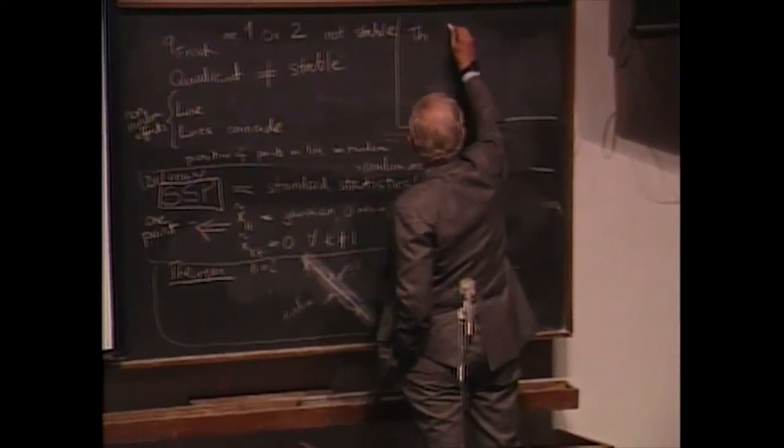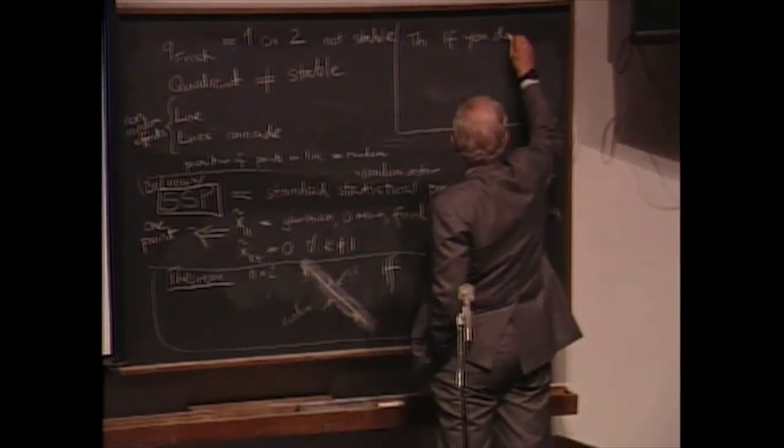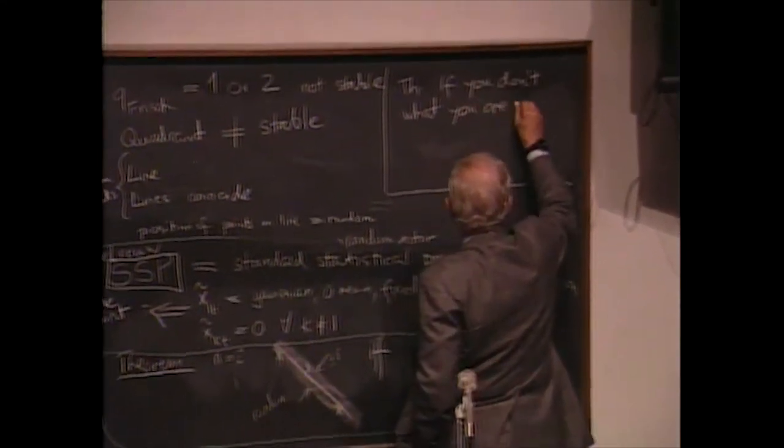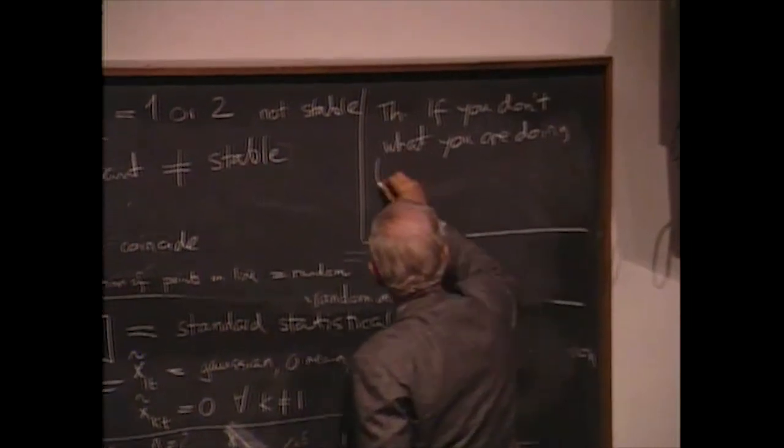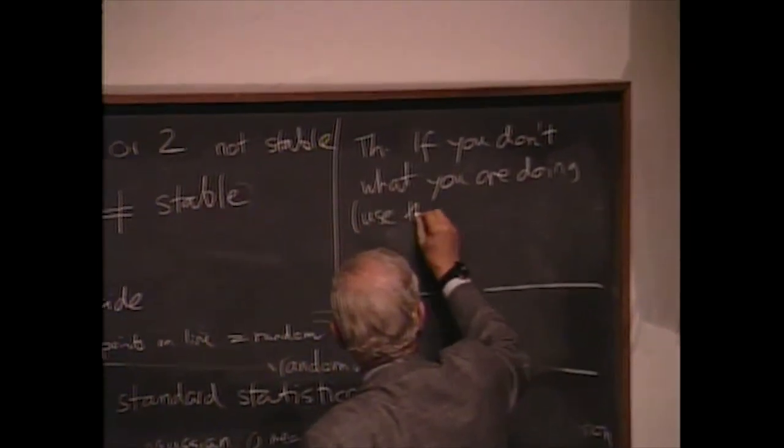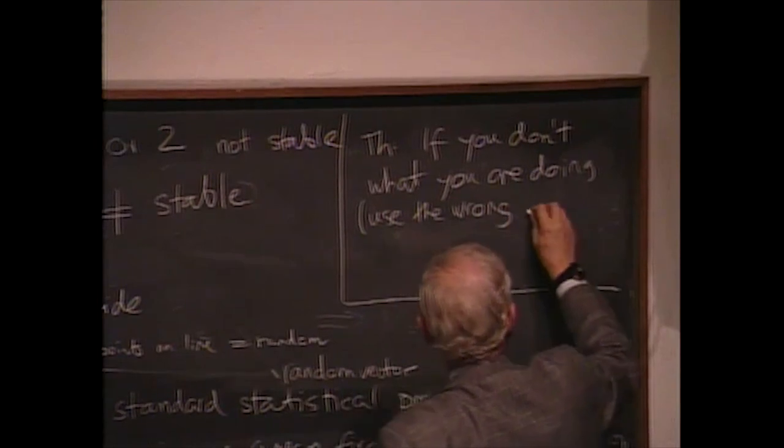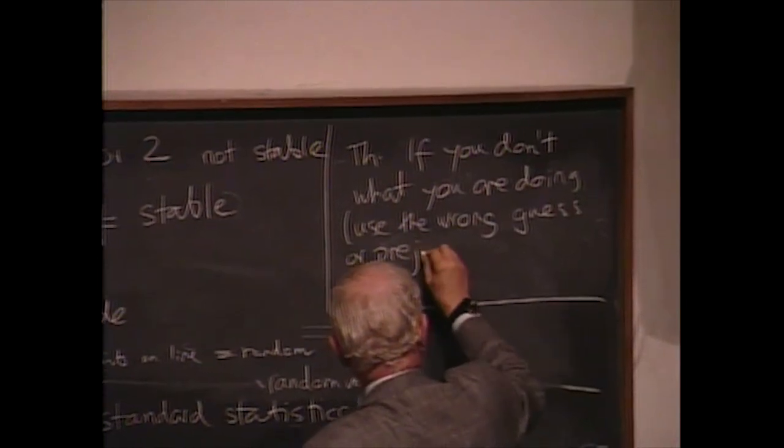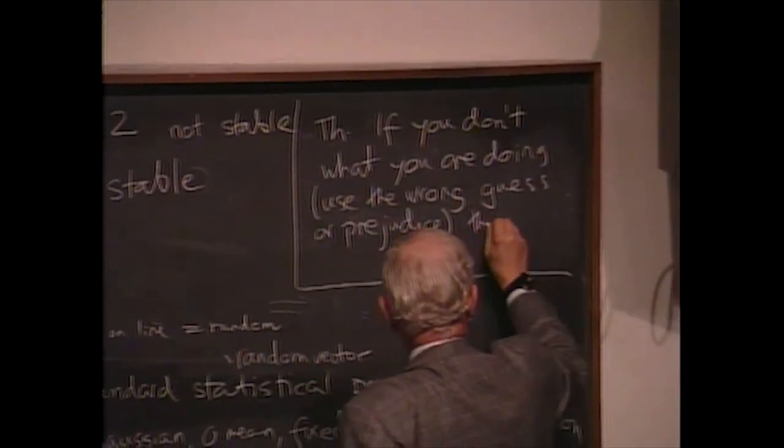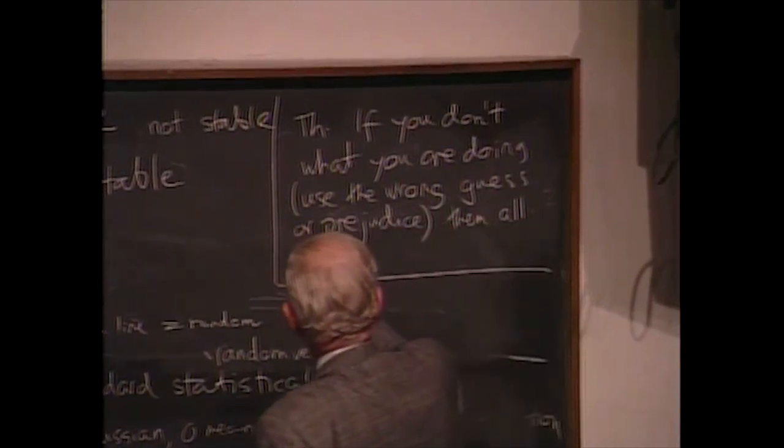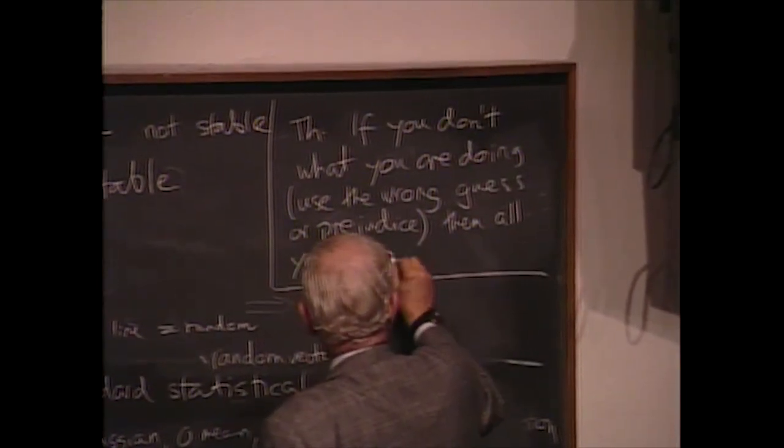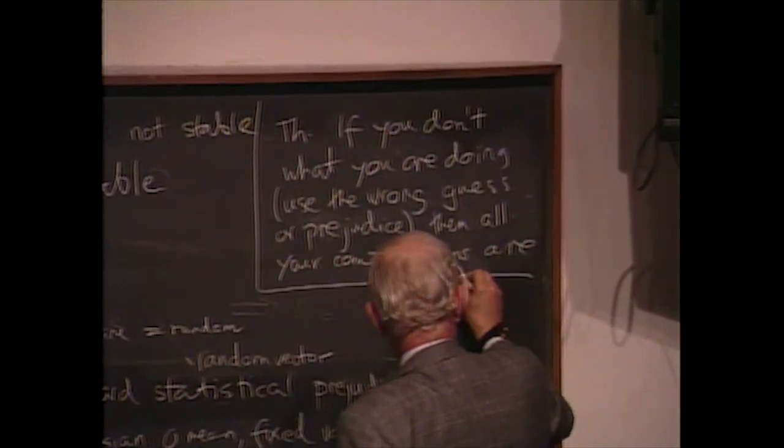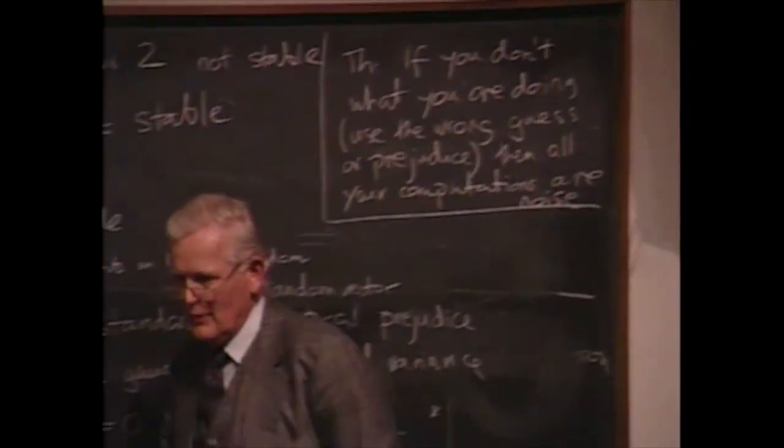So, to conclude, let me state one theorem which follows from this setup without any mathematical problems, but which has terrible implications on practice and which is the reason why classical econometrics died once you saw these things. The theorem says if you don't know what you are doing, which is technically the same, use the wrong prejudice, the wrong guess or prejudice, and then all your computations are noise. No information at all. Thank you very much.